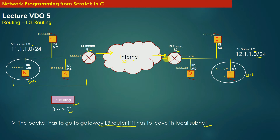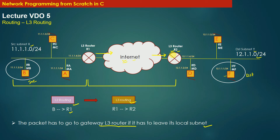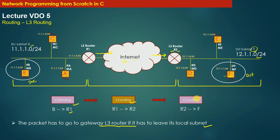By repeating this forwarding process, the packet eventually reaches Layer 3 router R2, which is the gateway router of the destination subnet. The journey of the packet between R1 and R2 is done entirely based on Layer 3 routing. Once the packet reaches R2, the router has the intelligence to determine that the packet belongs to a machine present in its directly connected subnet Y. Henceforth, the journey from R2 to the destination machine F is again accomplished by Layer 2 routing.